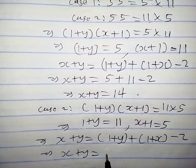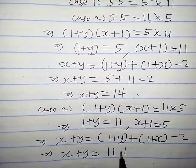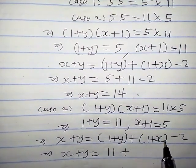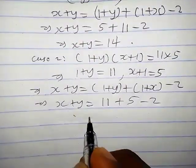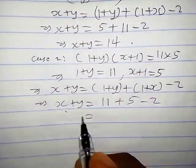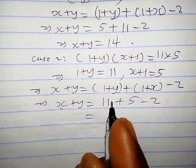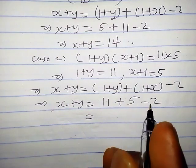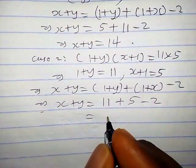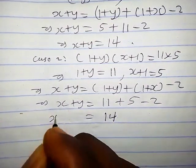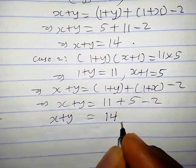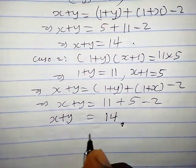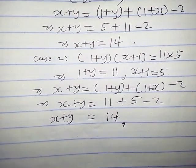So x plus y equals — what is 1 plus y? That is 11. Plus 1 plus x, that is 5, minus 2. So 11 plus 5 minus 2 equals 14. Therefore, x plus y equals 14, which is the required solution.